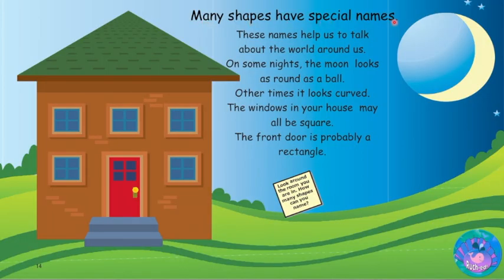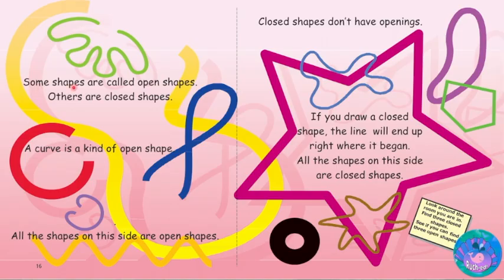Many shapes have special names. These names help us to talk about the world around us. On some nights the moon looks as round as a ball; other times it looks curved. The windows in your house may all be square. The front door is probably a rectangle. Look around the room you are in — how many shapes can you name?